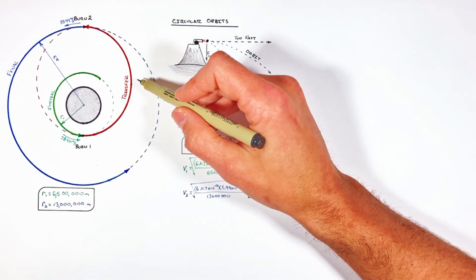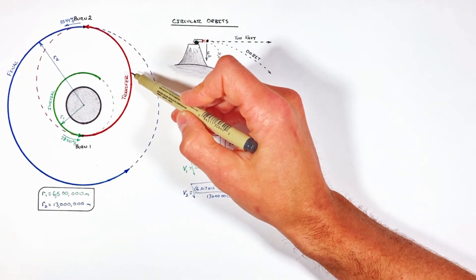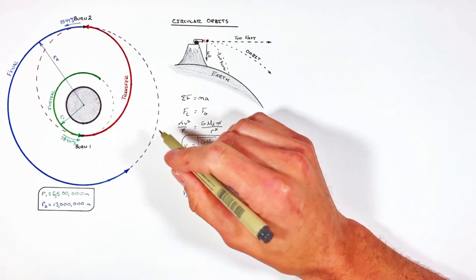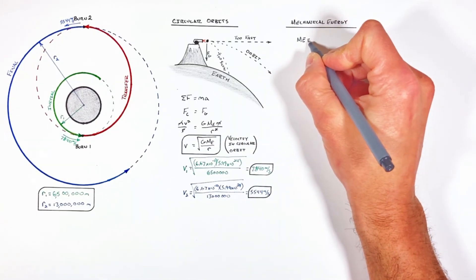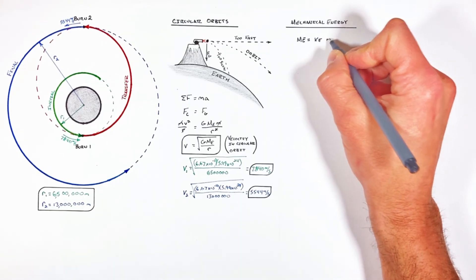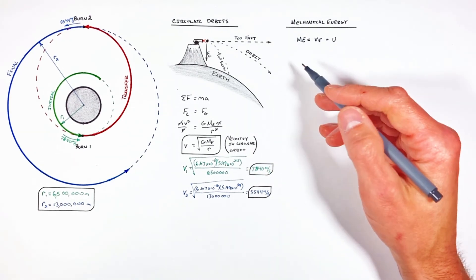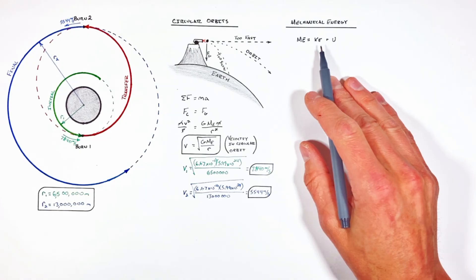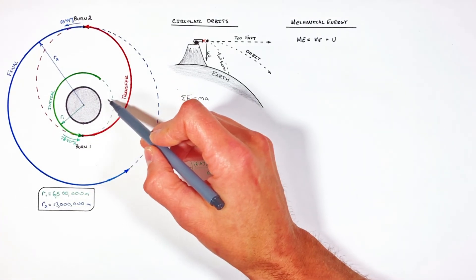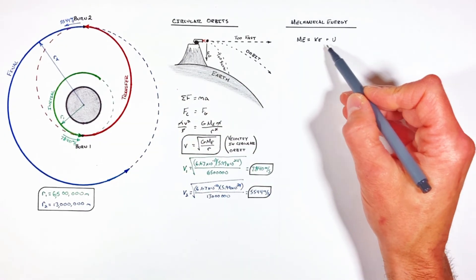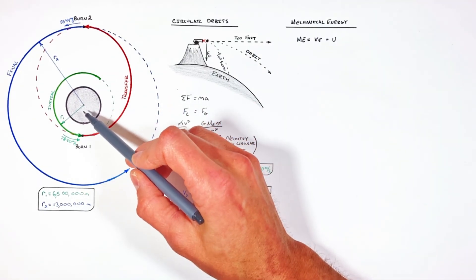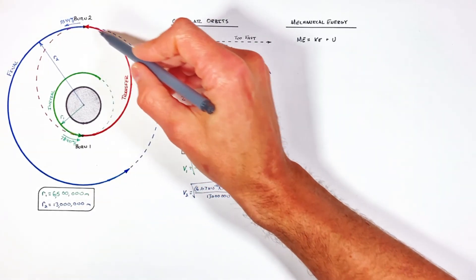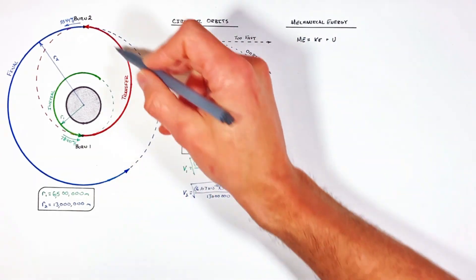The big question in a Hohmann transfer is: how much do we have to speed up the satellite to get it into the transfer orbit, and just how far will it drift into space? The answer involves energy. The mechanical energy of an object is the sum of its kinetic energy and gravitational potential energy. Just as a thrown ball slows down as it rises — gaining potential energy and losing kinetic energy — our satellite will gain potential energy and lose kinetic energy as it moves farther from Earth.